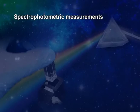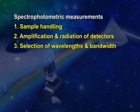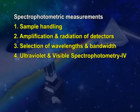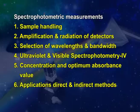Hello friends, I am Prashant Sahu. Here I am going to present another interesting and learning episode of B Pharma, entitled as Ultraviolet and Visible Spectrophotometry III. Steps in the spectrophotometric measurements includes sample handling, amplification and radiations of detectors, selection of wavelengths and bandwidth, and Ultraviolet and Visible Spectrophotometry IV. Concentration and optimum absorbance value application includes direct and indirect methods, analysis of mixture, which is one of the very important unit of the section of Pharmaceutical Analysis III of B Pharma, fourth semester.